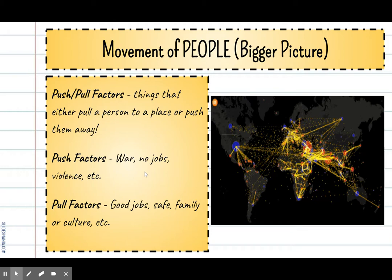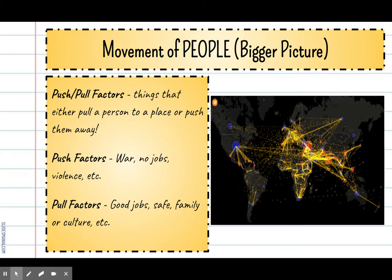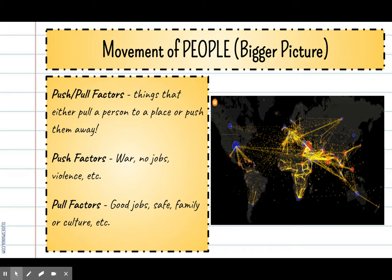That's the small and local picture of the movement of people. Now looking at the bigger picture — every one of those dots you see moving around the map represents people who are migrating, moving from one place to another. As geographers, we're really interested in why people move. So what we use are two terms: push and pull factors. A push and a pull factor are the things that either pull a person to a place or push them away.